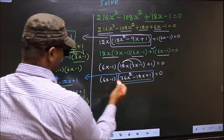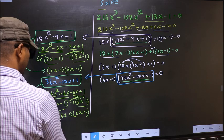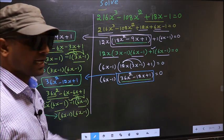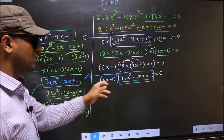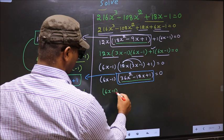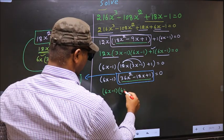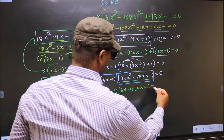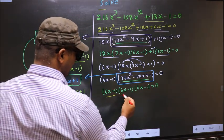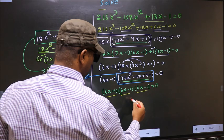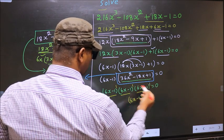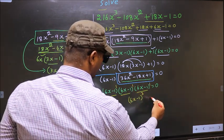Now in place of this quadratic we write the factored form. So the equation becomes (6x minus 1) times (6x minus 1) times (6x minus 1) equal to 0. Each factor is (6x minus 1), so the base is the same. The result is (6x minus 1)³ equal to 0, adding the powers 1 plus 1 plus 1 to get 3.